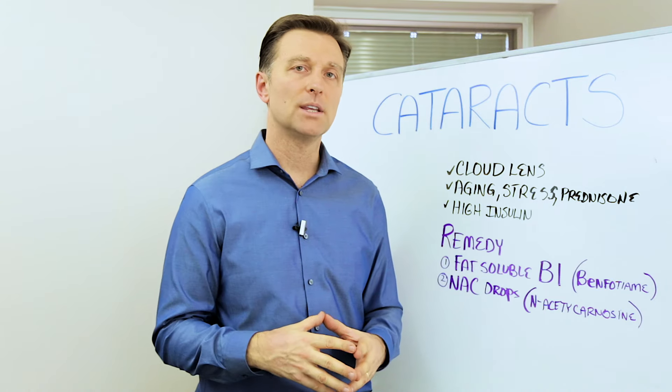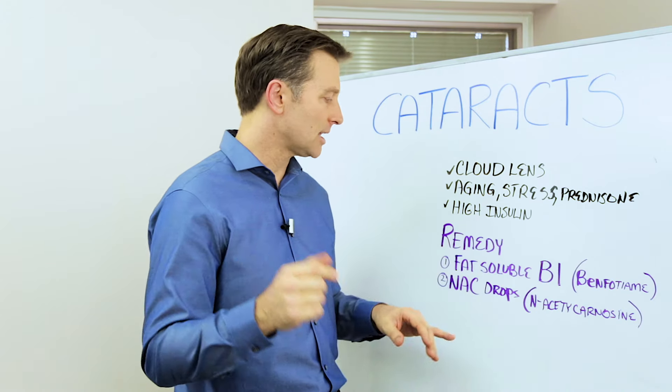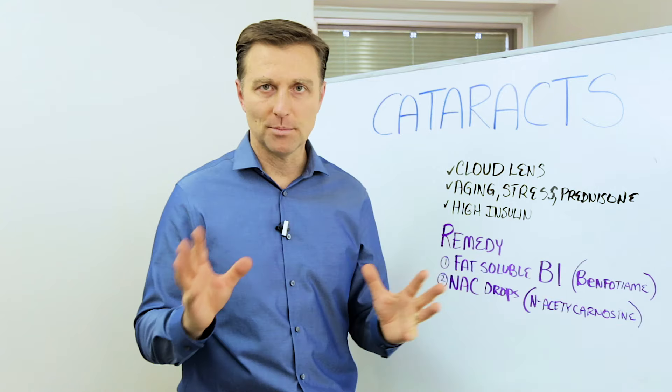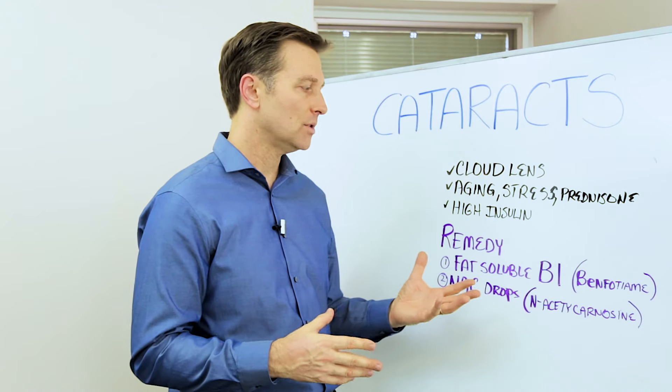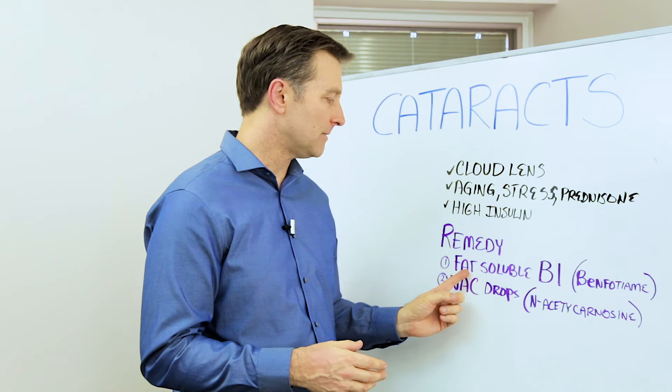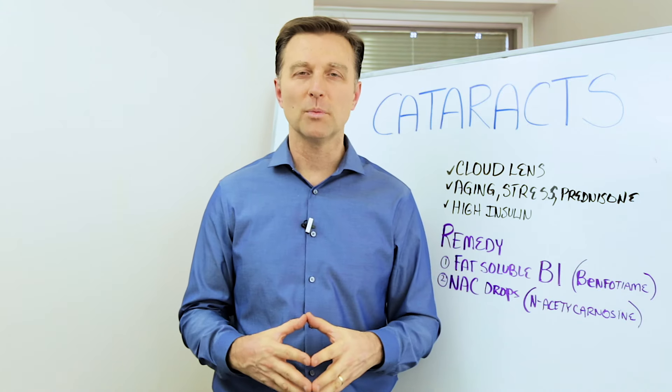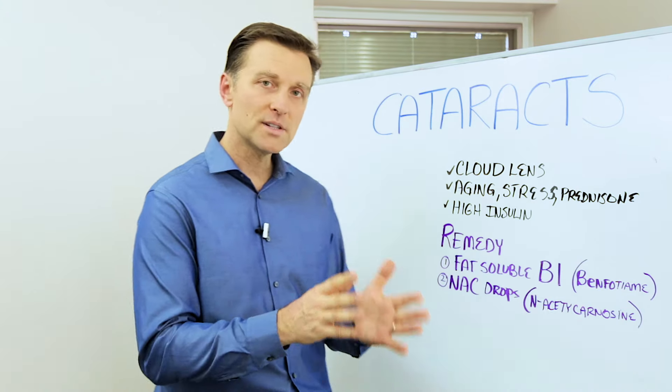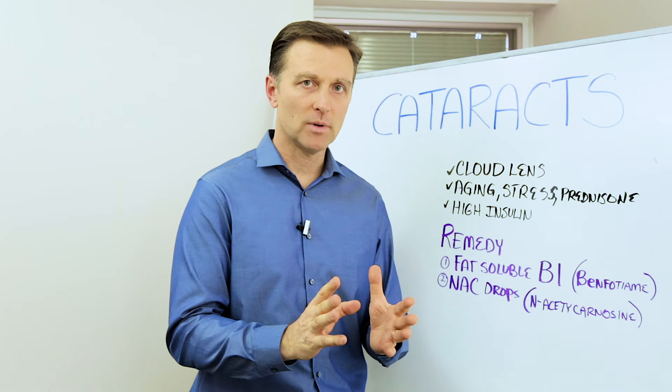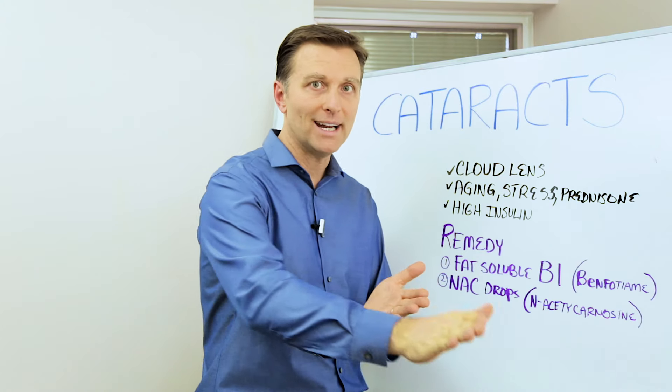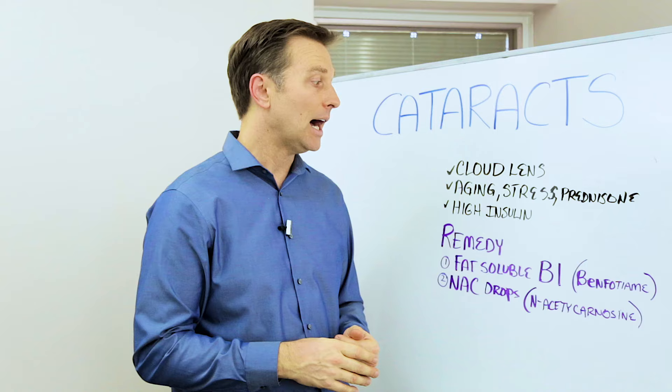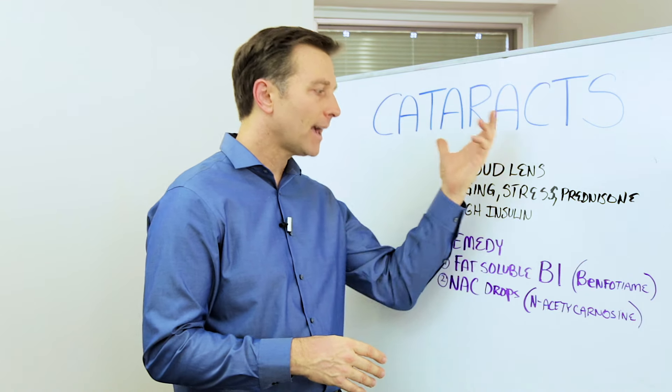So there's two great remedies that you can get. I'll put some links down below. I don't recommend any brands, but I'll just kind of tell you the form that you need, because you need a special type of fat-soluble vitamin B1. Normally B1 comes in a water-soluble, but being fat-soluble, it penetrates the cell membrane to get deep into the eye to help repair cataracts.